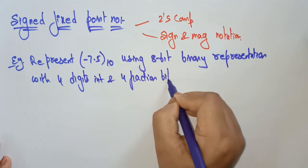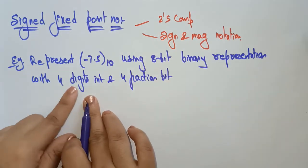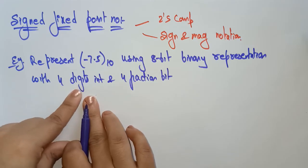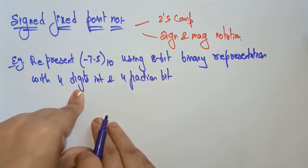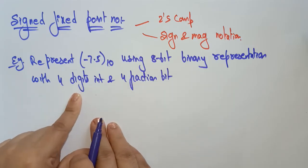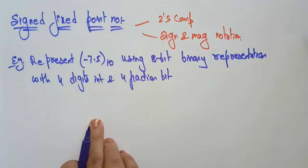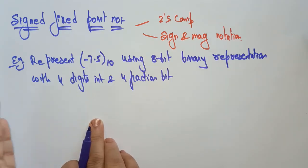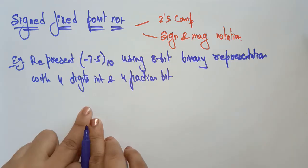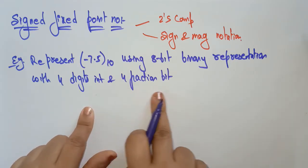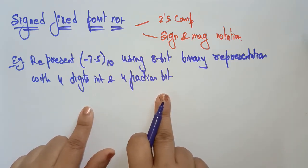The integer bits are a combination of the sign bit as well as the remaining left-hand side bits. The left-hand side 4 bits come under the integer part, and the most significant bit is the sign bit. After the dot, there should be 4 fraction bits.